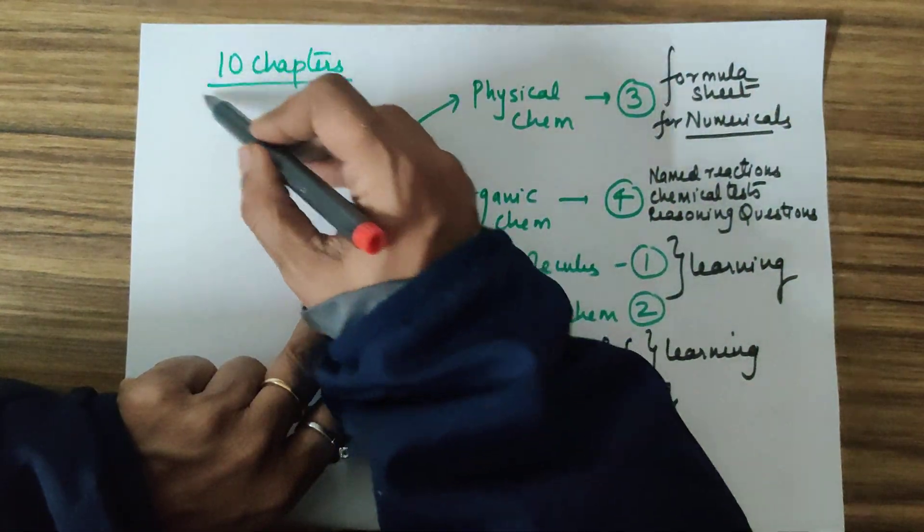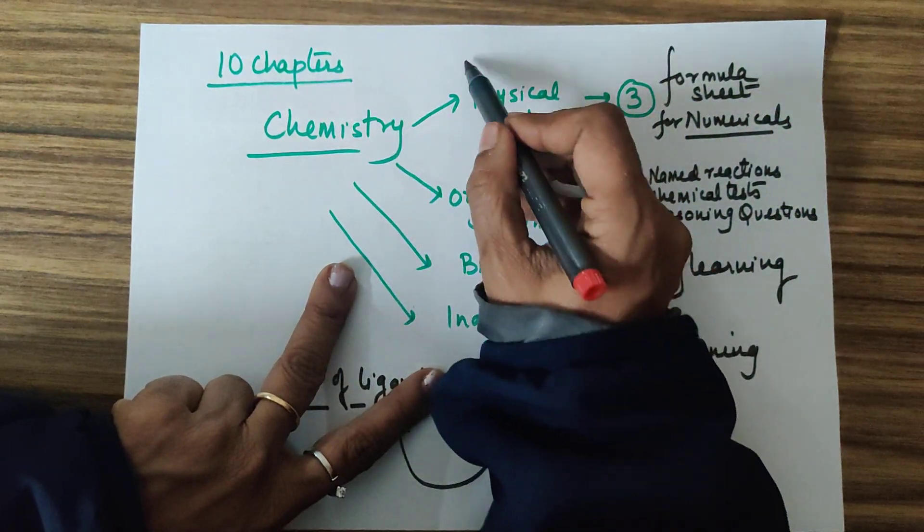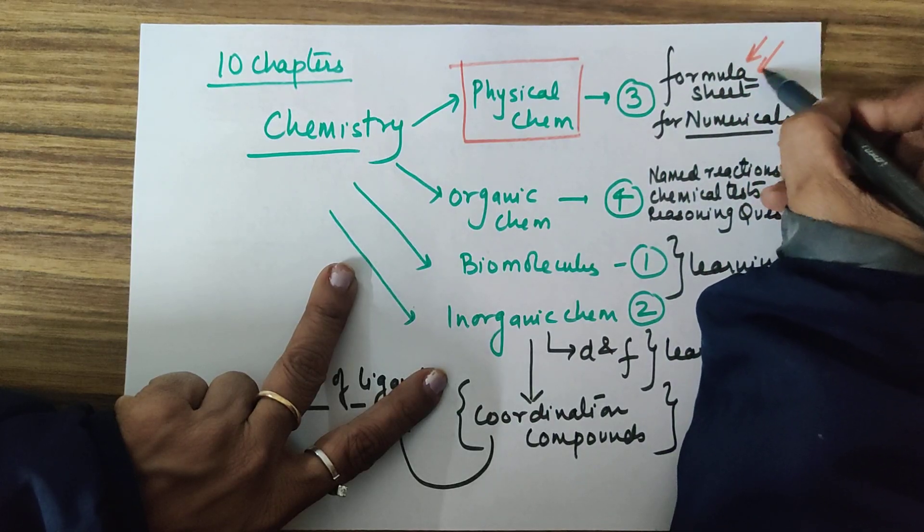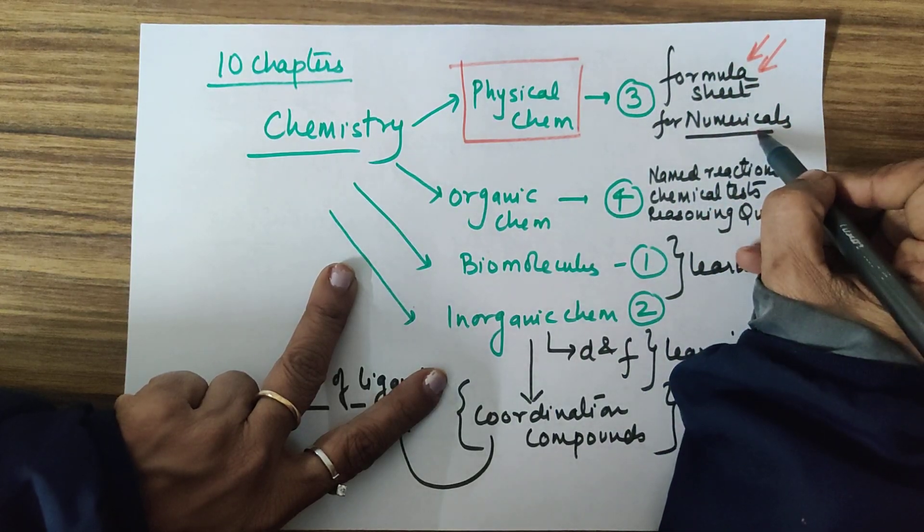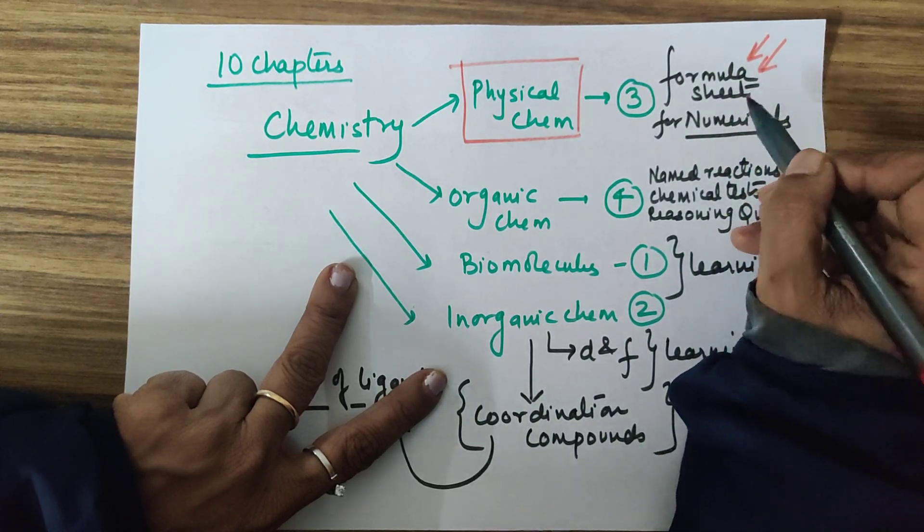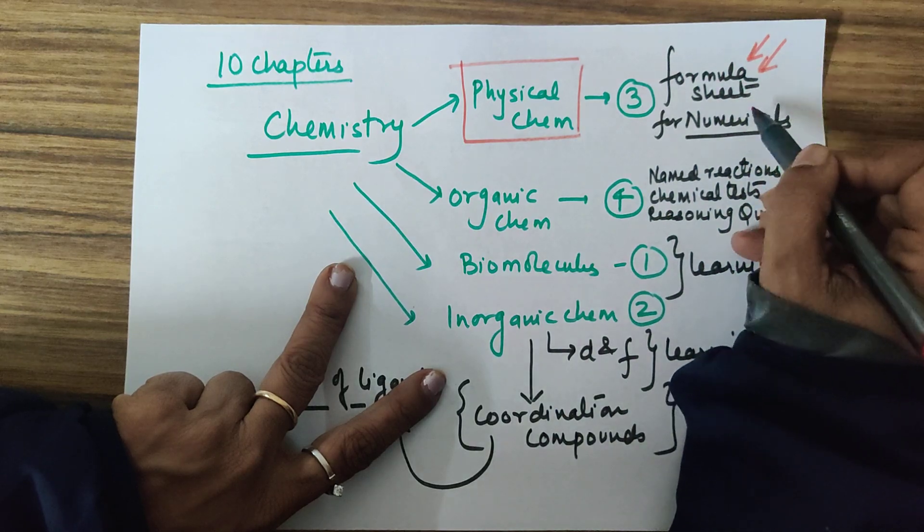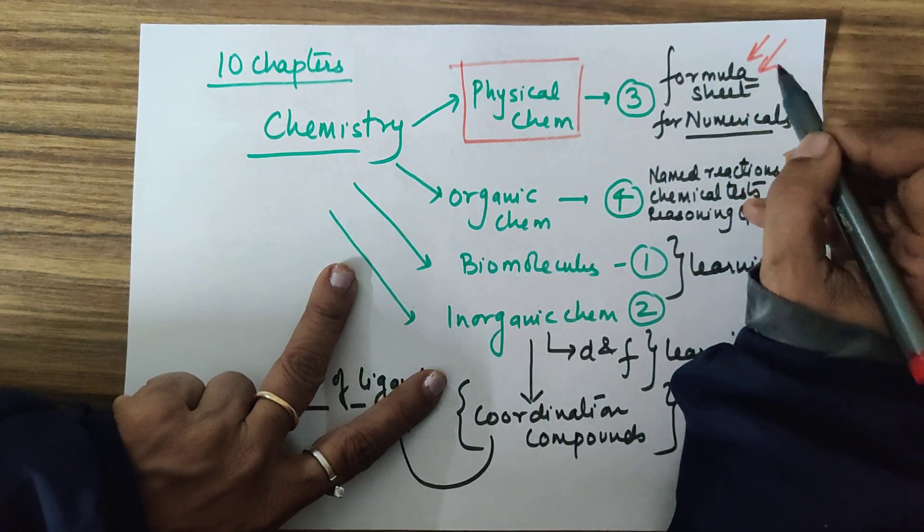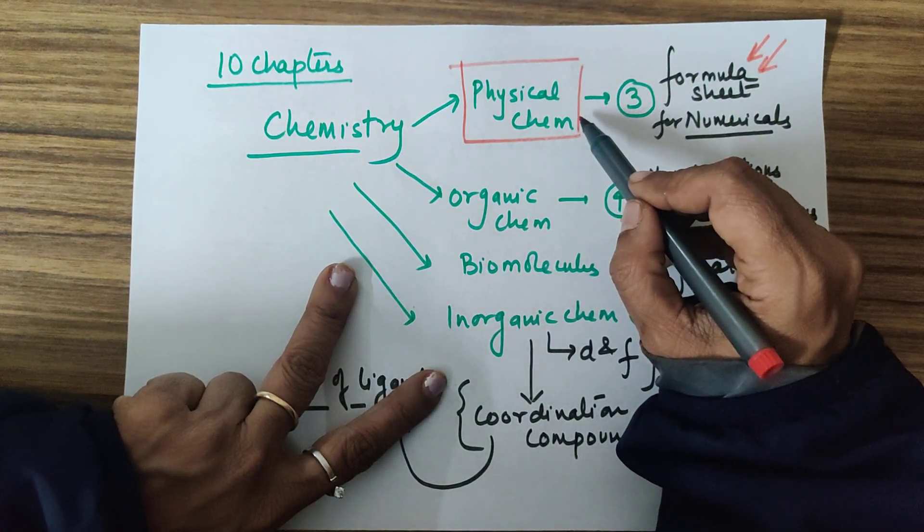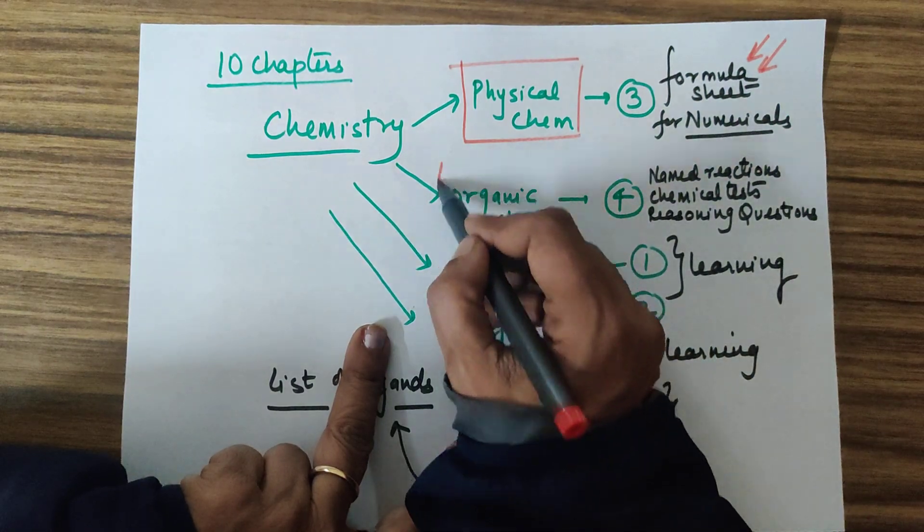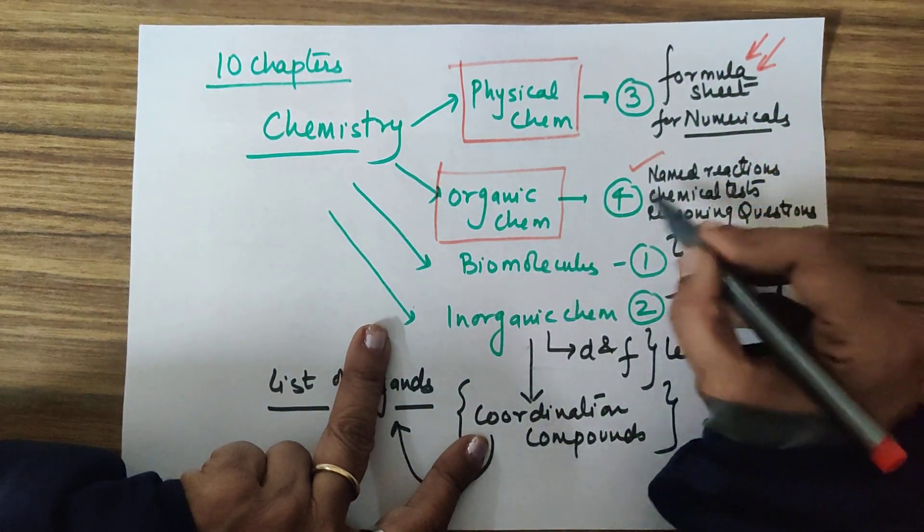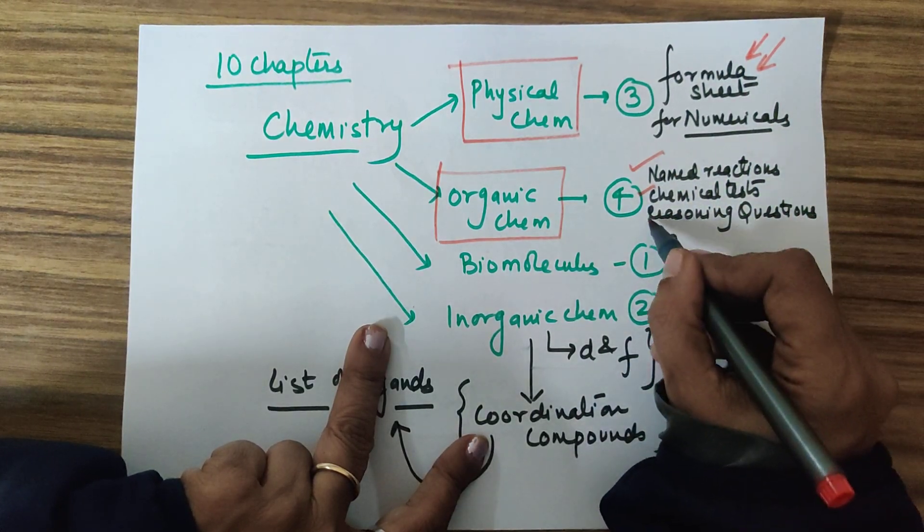Let's talk about chemistry. You have a total of 10 chapters in which you have 3 chapters in physical chemistry. Please make a formula sheet for numericals. You will keep a formula sheet in your study table. That will make life easier for you. When it will be 3 days between English and chemistry, then you will have work of this formula sheet. If you have any numerical practice, then you will have to do it in these 18 days. For organic chemistry, my advice is that you should have a named reaction sheet, a chemical test sheet and a reasoning question.